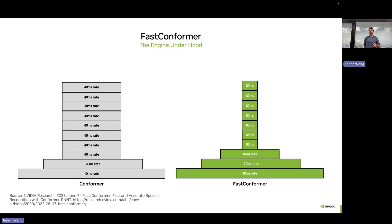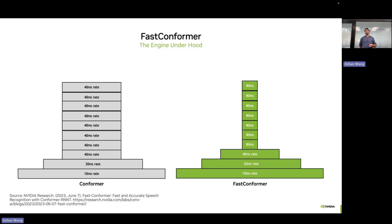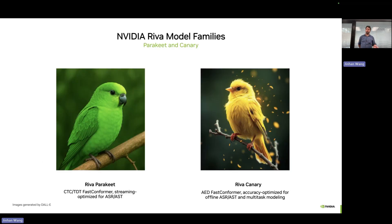Across all our different decoding platforms we have one unifying tool: our fundamental architecture is the Fast Conformer. Through empirical trials, we found the original conformer model can be greatly subsampled — instead of conventional 40-millisecond timestep compression, you add another subsampling step to get 80-millisecond compression. This lightens memory load during training and makes training more efficient with quicker convergence using less data. It also enables really fast inference by chunking data into 80-millisecond timesteps. This is a strong architecture at the backbone of all our decoding offerings.